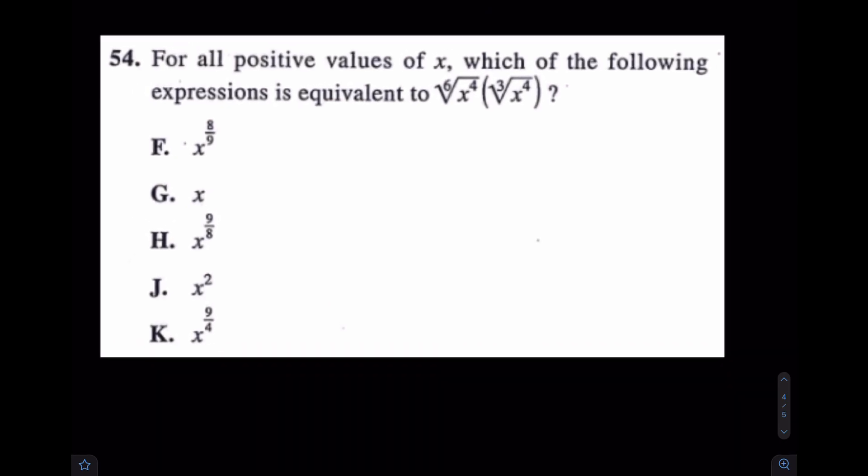This is employing that skill we just looked at, really turning these radicals into rational exponents, fractional exponents. In that case, how could you rewrite this one? This is x to the 4 6ths. This is x to the 4 3rds. Well, luckily, doesn't this simplify a little bit? I think it does. I think it's x to the 2 3rds times x to the 4 3rds.